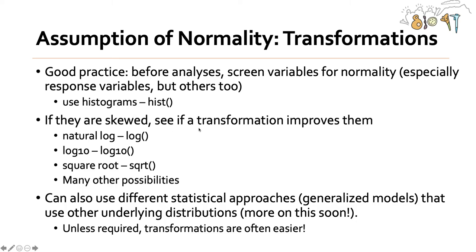If variables are skewed, you can see if a transformation improves them to look more normal. Some common examples are the natural log, log10, and square root, but there are many other possibilities. You need to report if you are doing a transformation, and that would need to be represented in how you label the y-axis. You can also use different statistical approaches such as generalized models that use other underlying distributions — for example, logistic regression — but unless it's required, transformations are oftentimes easier.